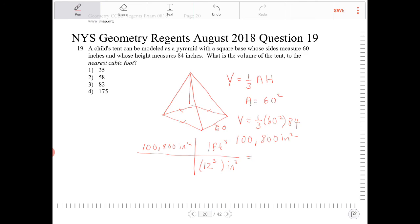The question says to round to the nearest cubic foot, so this is going to be 58. That is option 2.